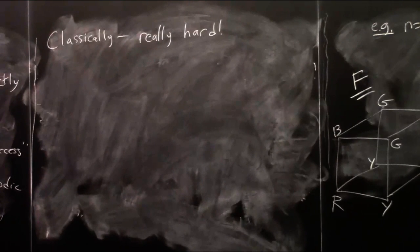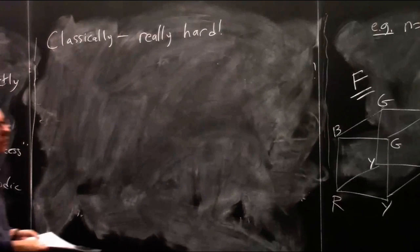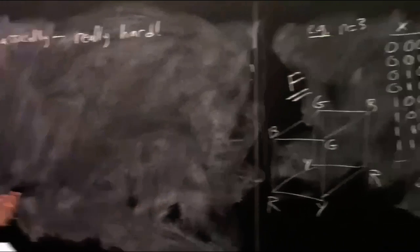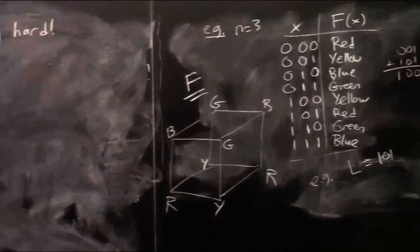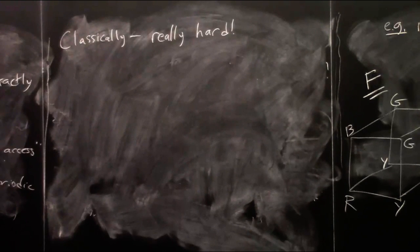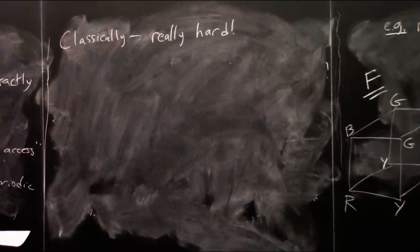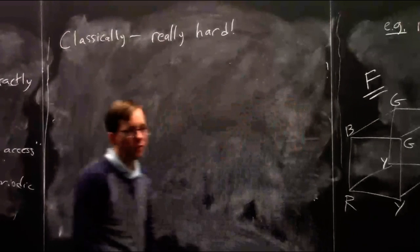If you see one color and sample other values getting other colors, that doesn't tell you anything additional about the period — you need to see one color twice. If you get k queries all with different color outputs, it tells you a lot about what L is not, so you can eliminate many candidates. But it's very unlikely to find a matching pair unless you do quite a few queries. After about square root of N draws, you'll find two outputs of the same value.